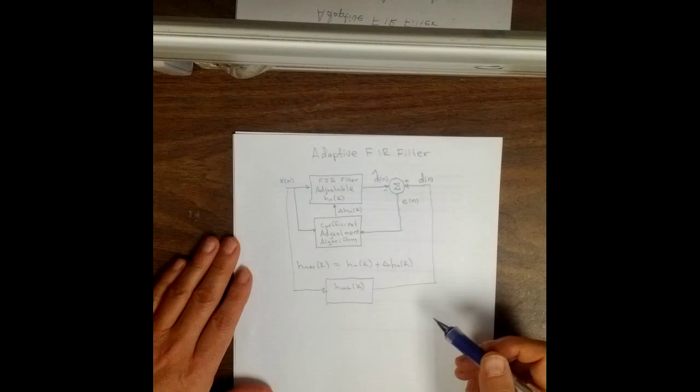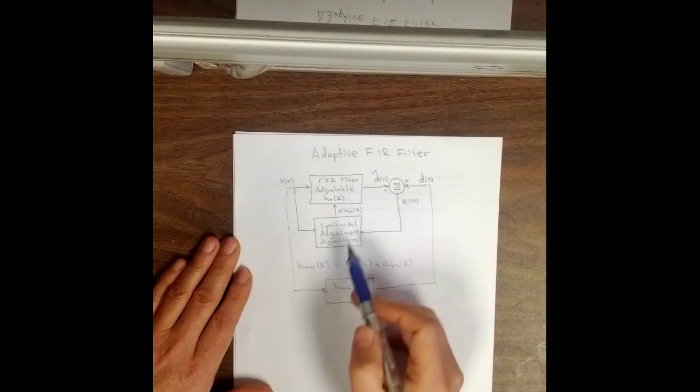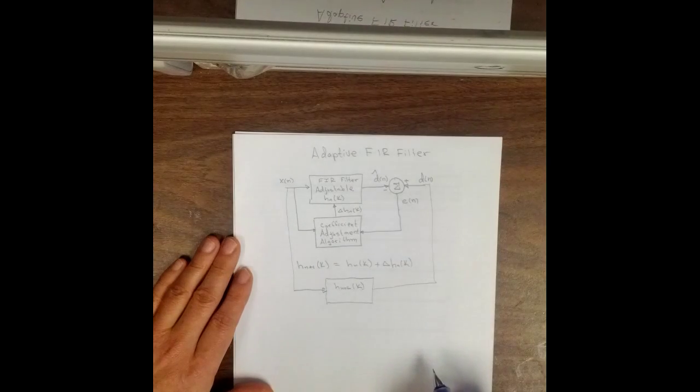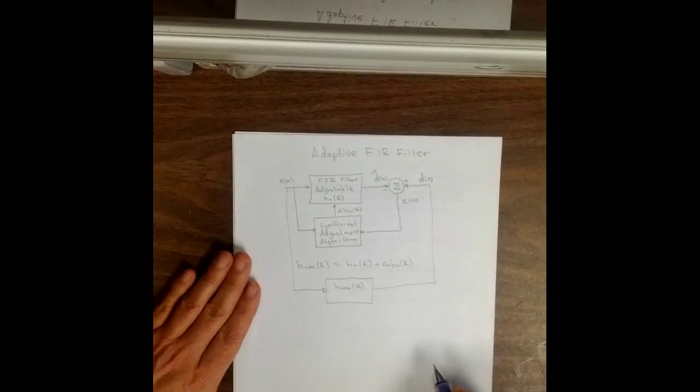So now the question is, how in the world do we change or do we compute the h sub unknown of k? In other words, what's a good coefficient adjustment algorithm? How could we do that?